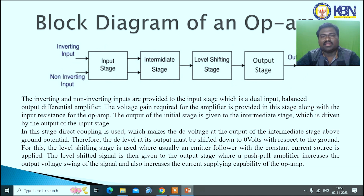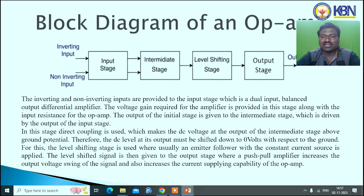The inverting and non-inverting inputs are provided to the input stage, which is a dual-input balanced-output differential amplifier. The voltage gain and input resistance of the op-amp are provided at this stage. The output of the input stage is given to the intermediate stage, which uses direct coupling. This makes the DC voltage at the output of the intermediate stage rise above ground potential, so a level shift stage — typically an emitter follower with a constant current source — shifts it down to zero volts. Finally, a push-pull amplifier in the output stage increases output voltage and current-supplying capability.